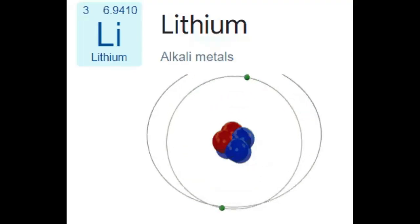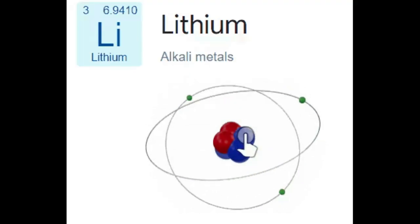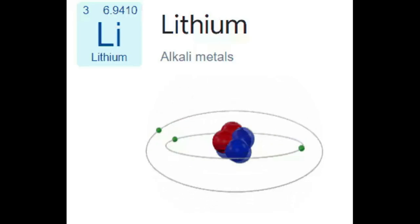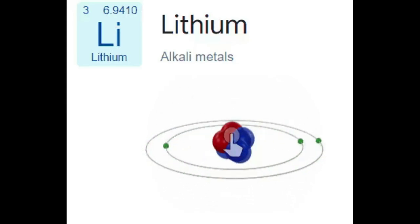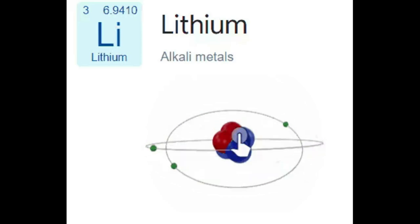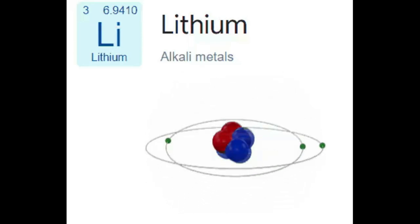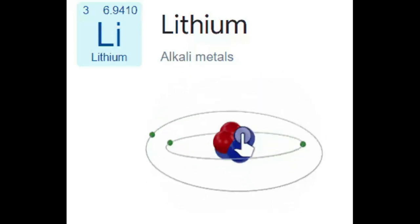Here are some key details about lithium on the periodic table. Symbol: Li. Atomic number: 3. Atomic mass: approximately 6.9 atomic mass units. Group 1, alkali metals. Period 2. Block: s-block.